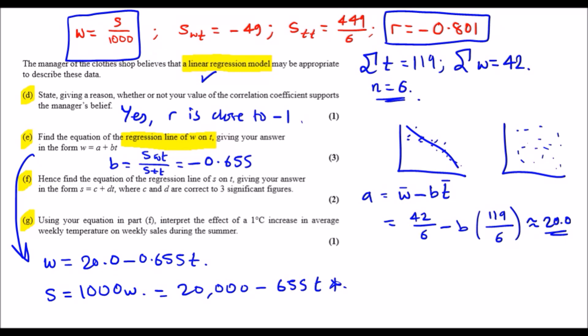Lastly, part G. So using your equation in part F (so this is the S on T equation), interpret the effect of a 1 degree Celsius increase on average (so this is when T increases by one) on weekly sales during the summer. Okay, so first let's understand what this equation means. We have S equals 20,000 minus 655T. Now just looking at this, the 20,000 appears to be constant.